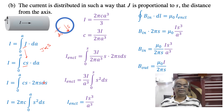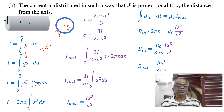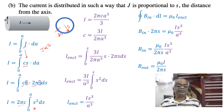Taking constants outside, we get I = 2πc ∫₀ᴬ s² ds. Integrating s² gives s³/3, and applying the limits gives A³/3. So I = 2πc · A³/3. Solving for c, we get c = 3I / (2πA³).